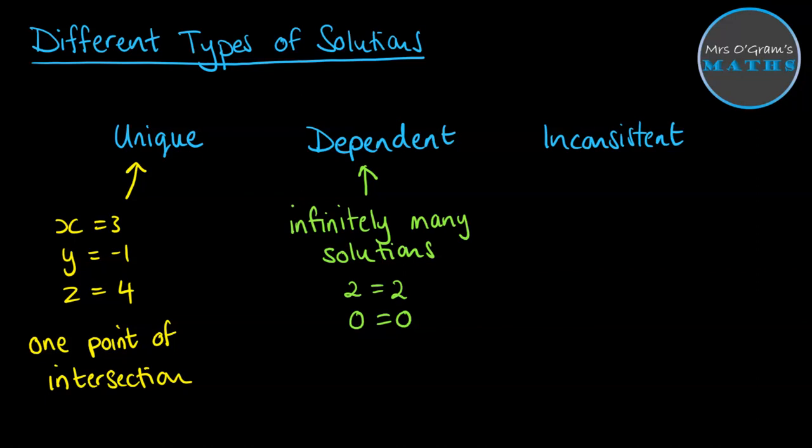So x, y, and z can be lots and lots of different things because this will always be true no matter what x, y, and z are. Now, what that means geometrically is that we have a line of intersection. And finally, we have inconsistent, which means that we get no solutions. There's no place where those planes are intersecting either at one particular point or on a straight line. There's actually no solution.